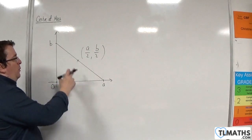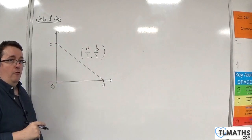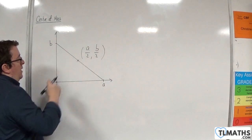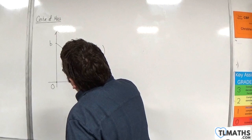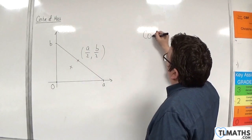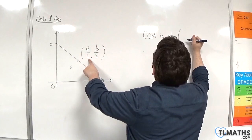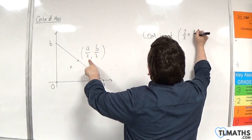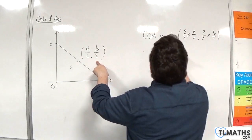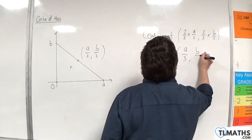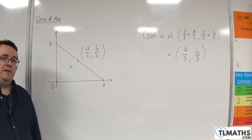So now we want to find the point that is two-thirds of the way along that line from the origin, splitting it up into the ratio of 2 to 1. So in that case, our centre of mass, roughly there, is at two-thirds times A over 2 and two-thirds times B over 2. And that will be A over 3, B over 3. And that's the centre of mass — those would be the coordinates of the centre of mass of this right-angled triangle: A over 3, B over 3.